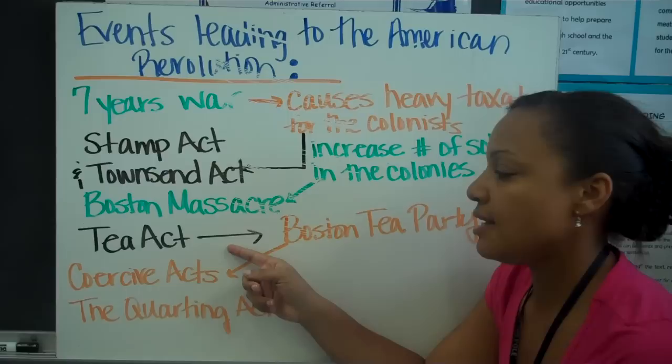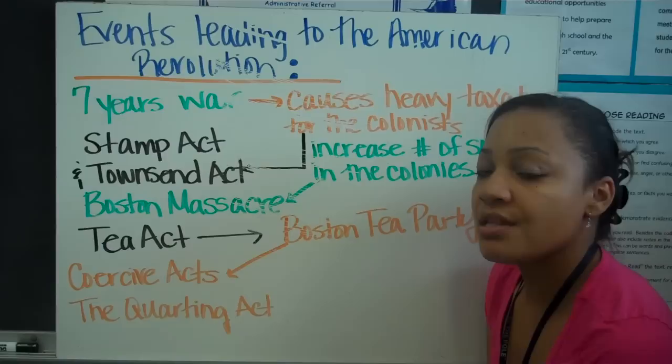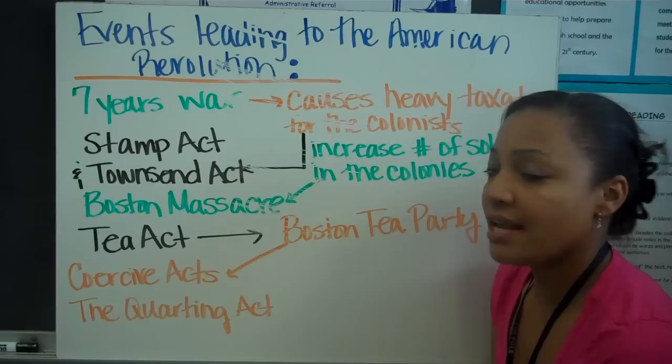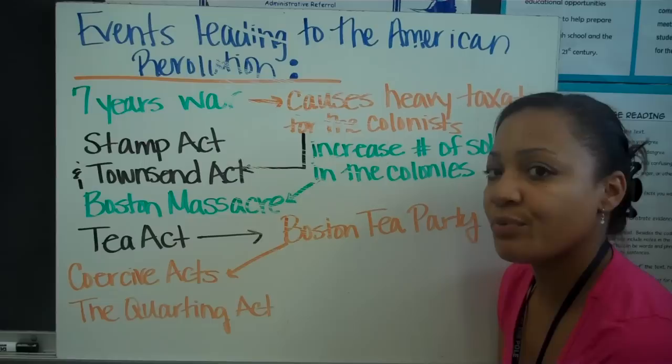Britain already knew there was tension, but the king went ahead and issued another tax — a tax on tea called the Tea Act. The colonists formed a group called the Sons of Liberty, who were against what the king was doing. Eventually they encouraged colonists to break away. The Sons of Liberty dressed up like Native Americans, boarded British ships, and poured the tea overboard — this is called the Boston Tea Party.